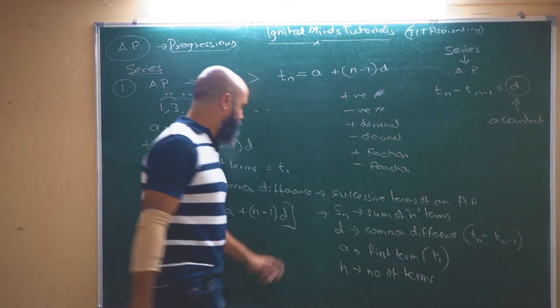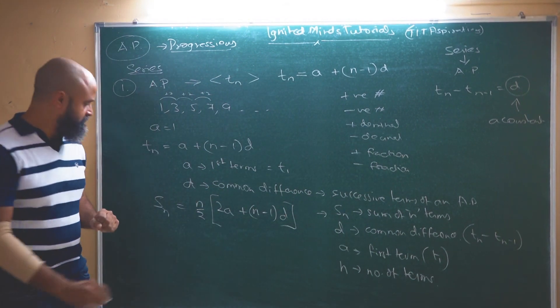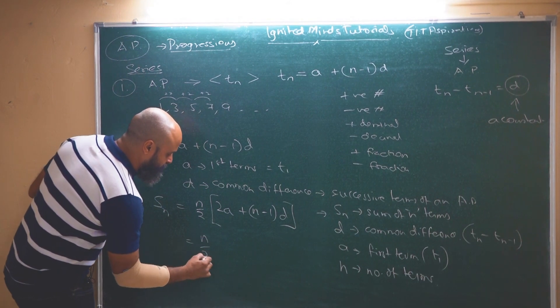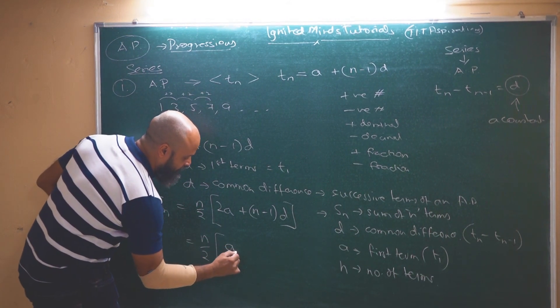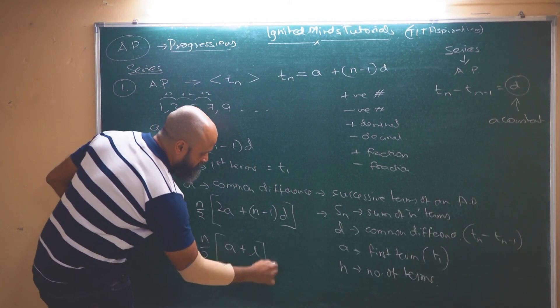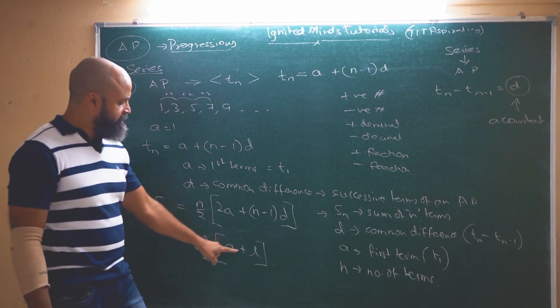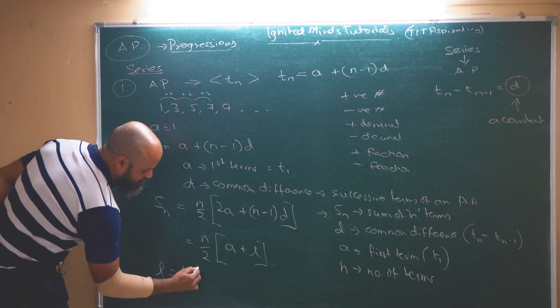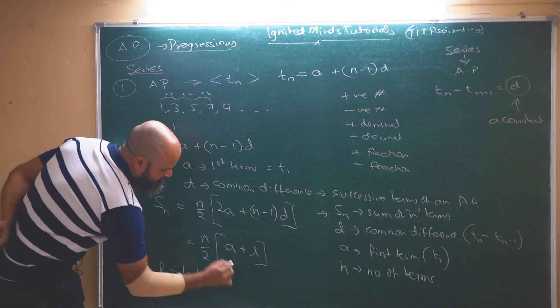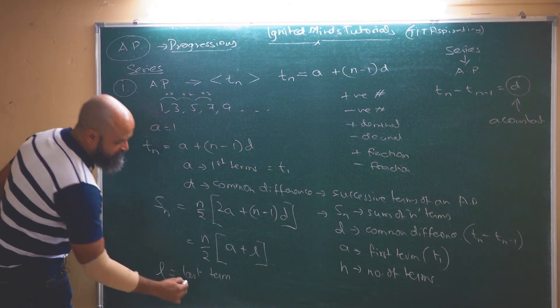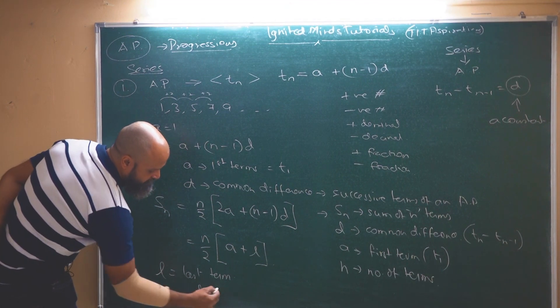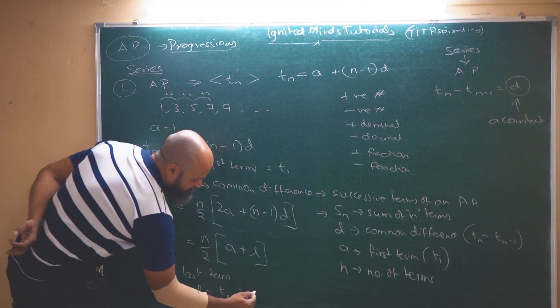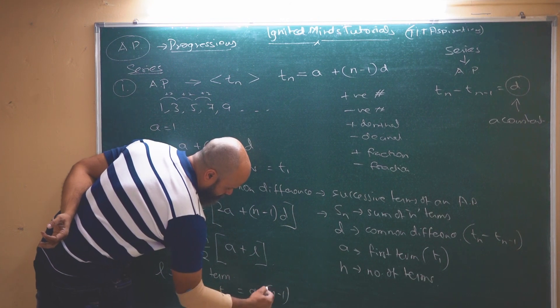So we generally have two ways in order to represent this sum of n terms. The other way to represent this will be n by 2, a plus l. Now this a is again the first term. What do we mean by this l? l is basically the last term of the AP and since we have n terms here, we can correlate this l to the nth term which is a plus n minus 1 into d.